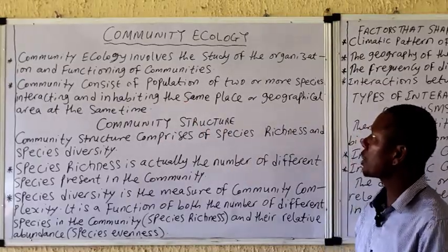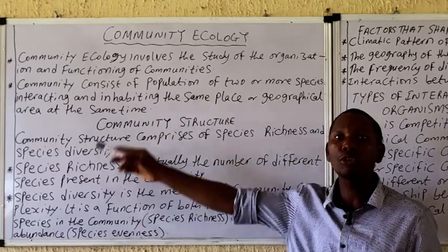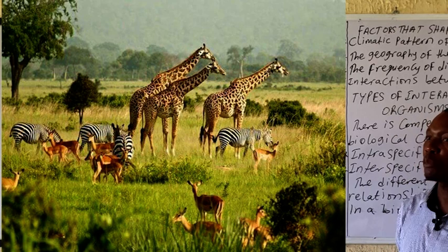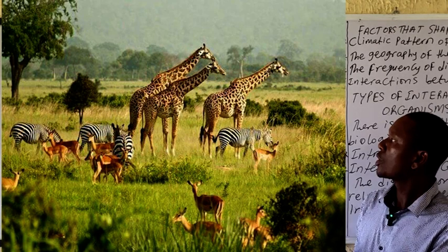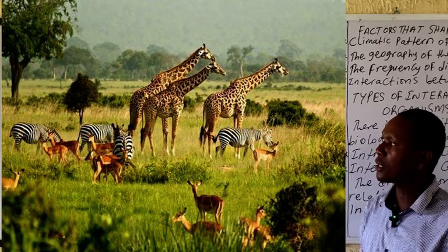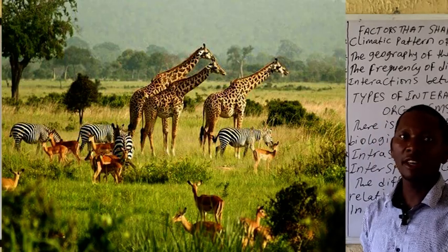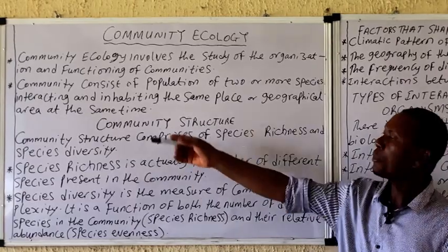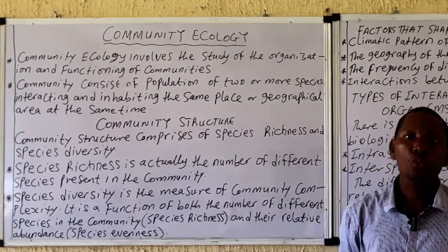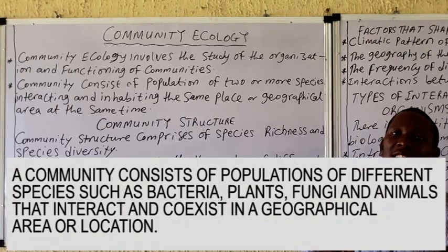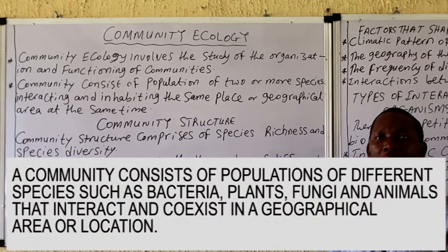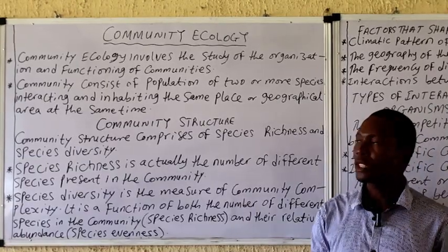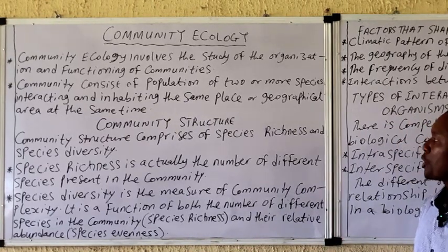Community ecology involves the study of the organization and functioning of communities. A community comprises populations of two or more species inhabiting and interacting in a particular place or geographical location at a particular time. You can see different animals and plants inhabiting the environment in the diagram on the board.